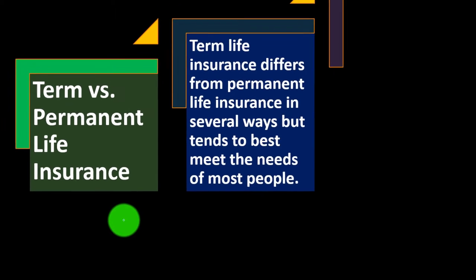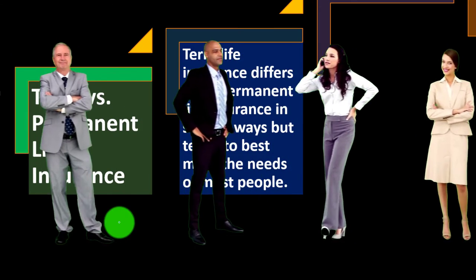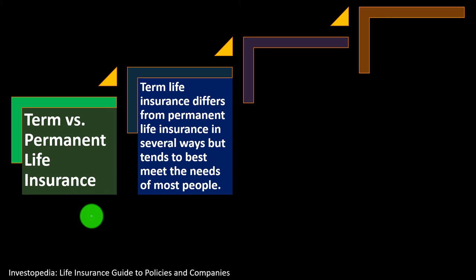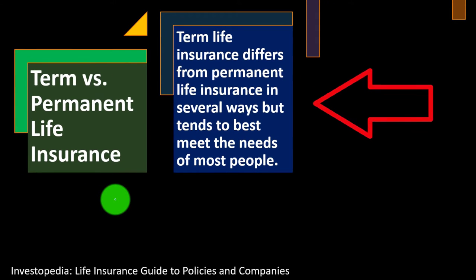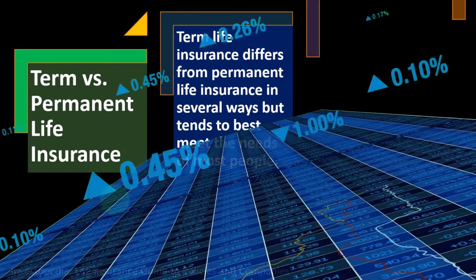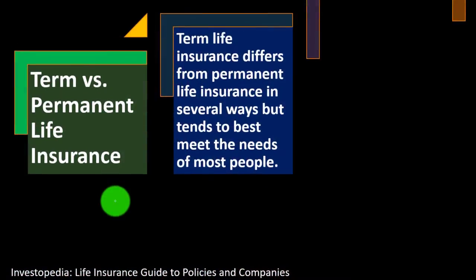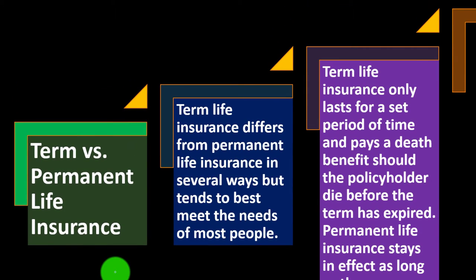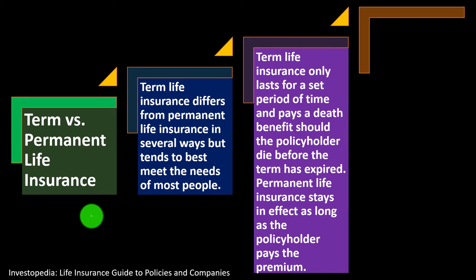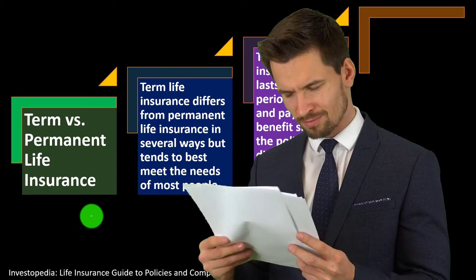Term versus permanent life insurance. Term life insurance differs from permanent life insurance in several ways, but tends to best meet the needs of most people. More conservative people might say term life insurance is the way to go — if you're purchasing life insurance, term is pretty straightforward. If you're investing in something with an investment component, you might want to be in stocks and bonds, unless you're doing a strategy that gives you other benefits such as tax benefits.